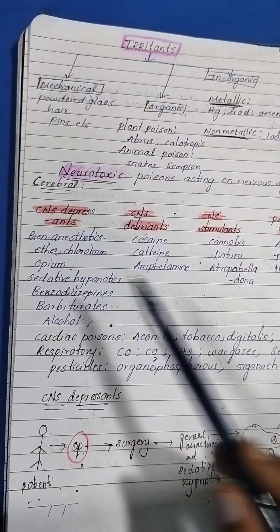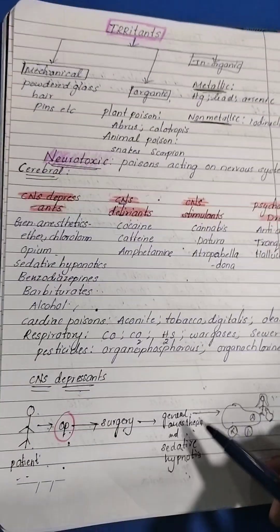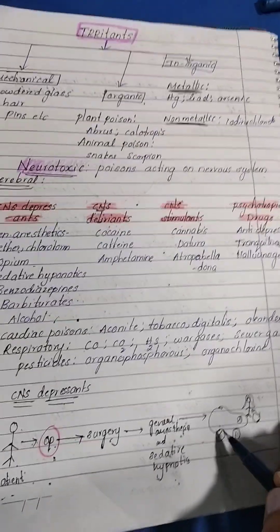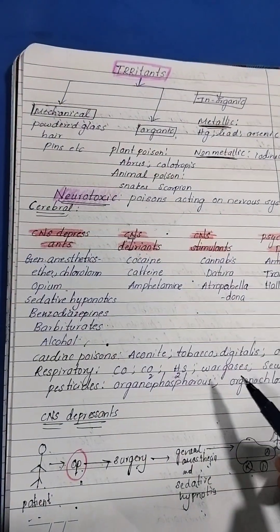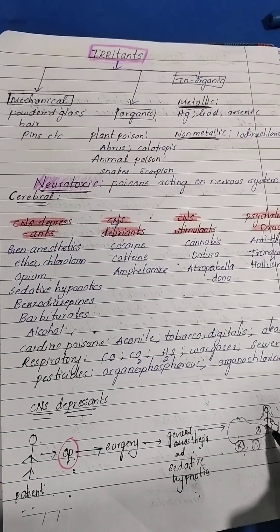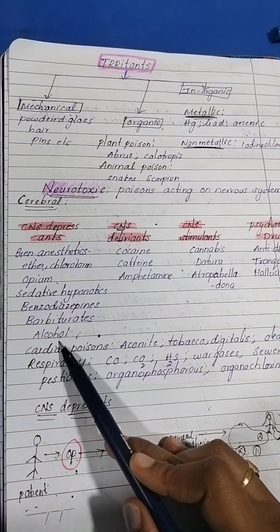Doctor saw a Benz car - benzodiazepines. A girl came out like a Barbie doll - barbiturates. She's drinking alcohol.